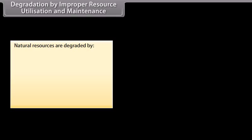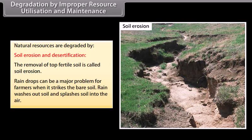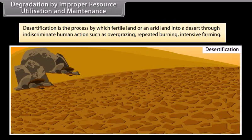Natural resources are degraded by soil erosion and desertification. The removal of top fertile soil is called soil erosion. Raindrops can be a problem for farmers when they strike bare soil, washing and splashing soil into the air. Desertification is the process by which fertile land is turned into desert through indiscriminate human actions such as overgrazing, repeated burning, and intensive farming.